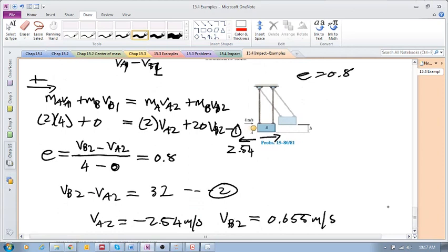That was the first step, to get the initial velocity of this block right after impact. Now we've got the velocity of the block right after impact, and that will allow us to do the second analysis which deals with conservation of energy. We can use T1 plus V1 equals T2 plus V2.